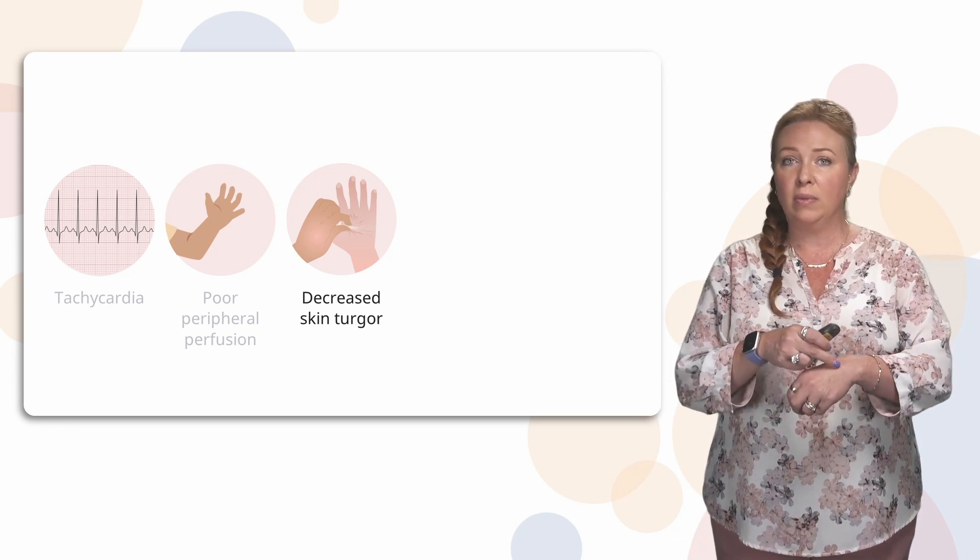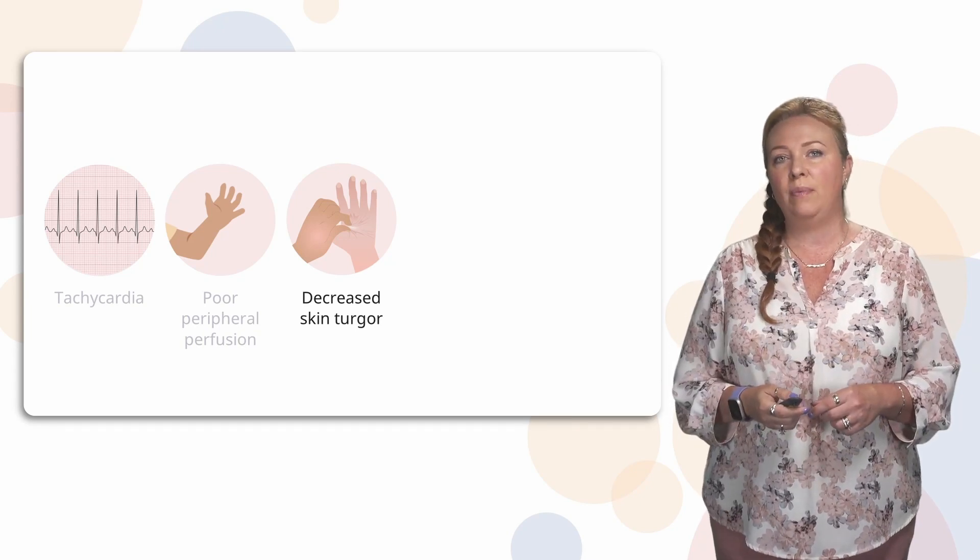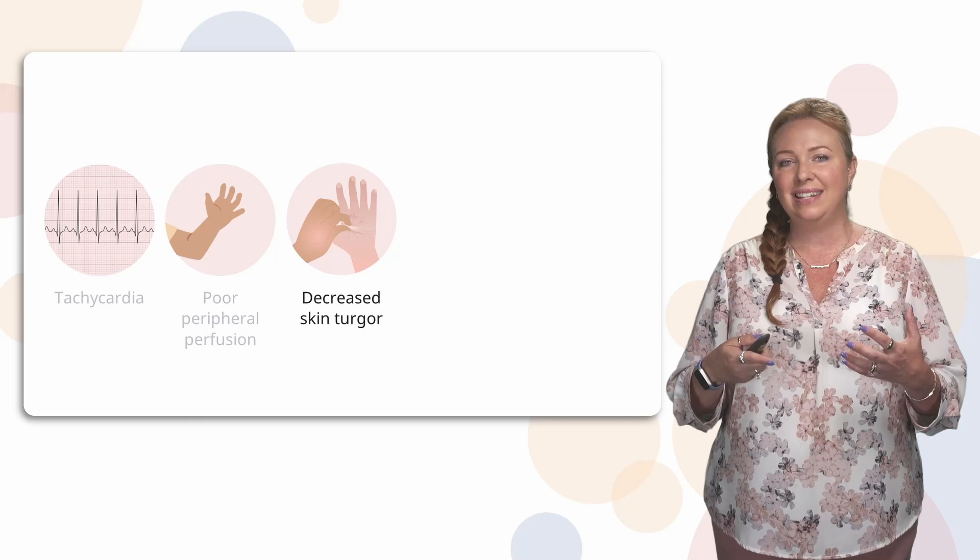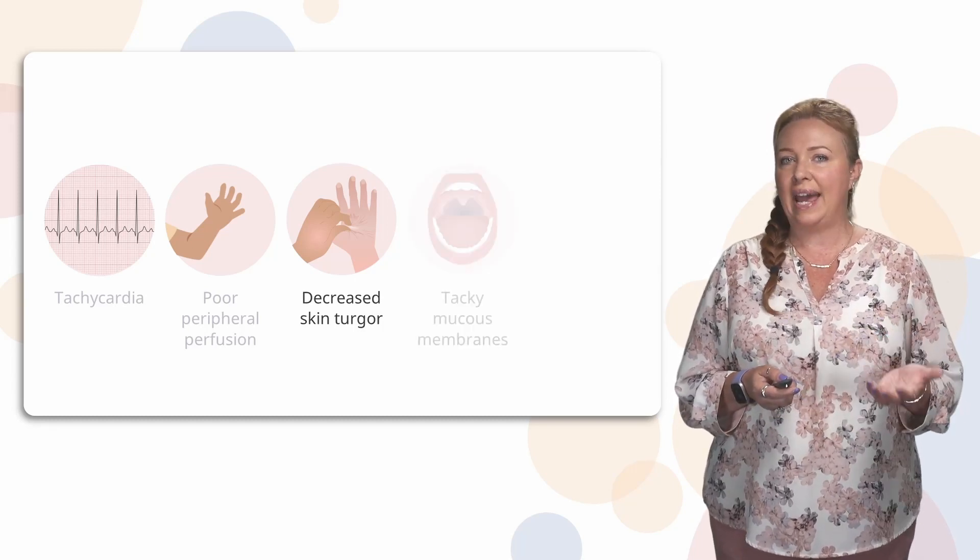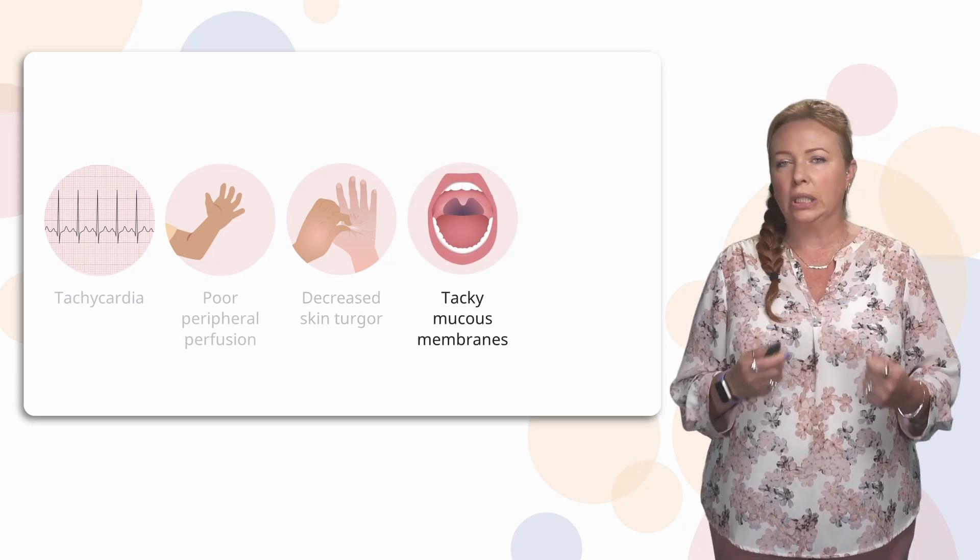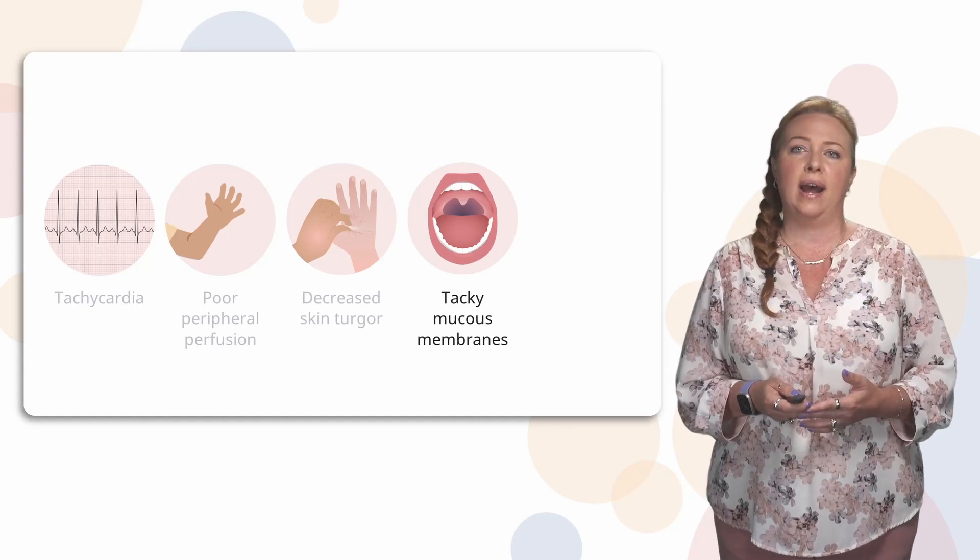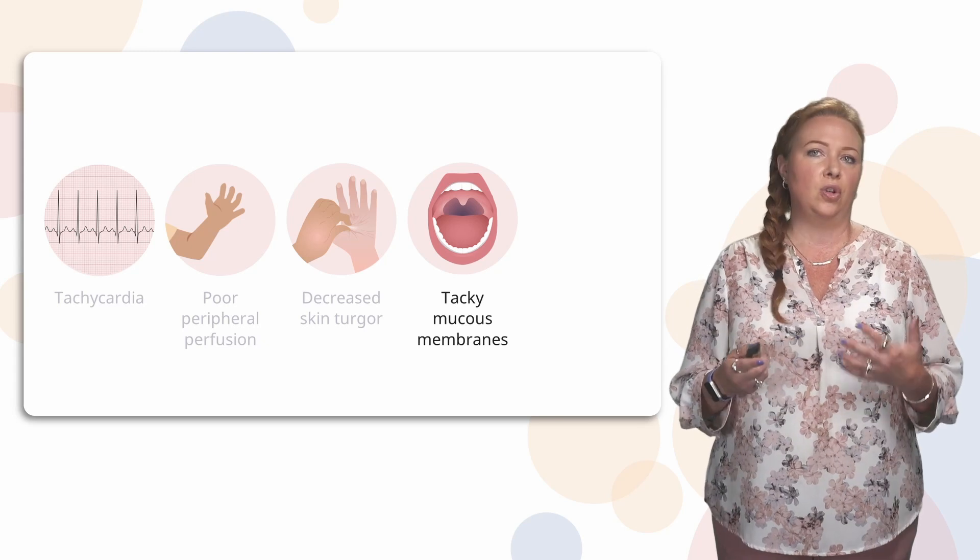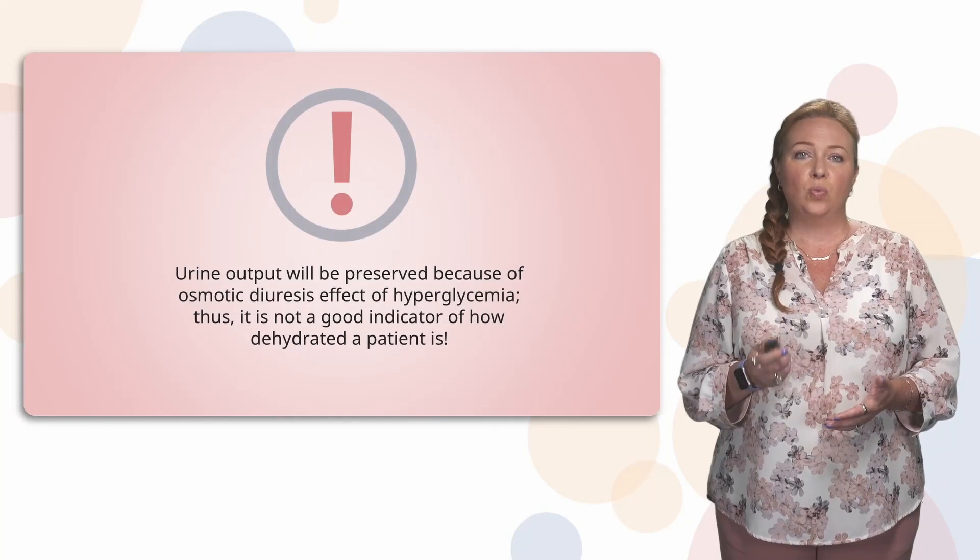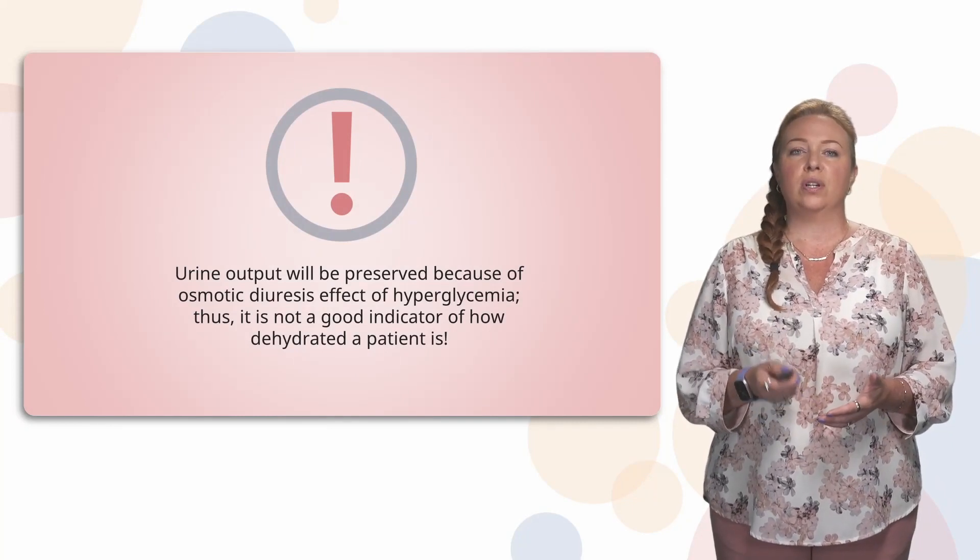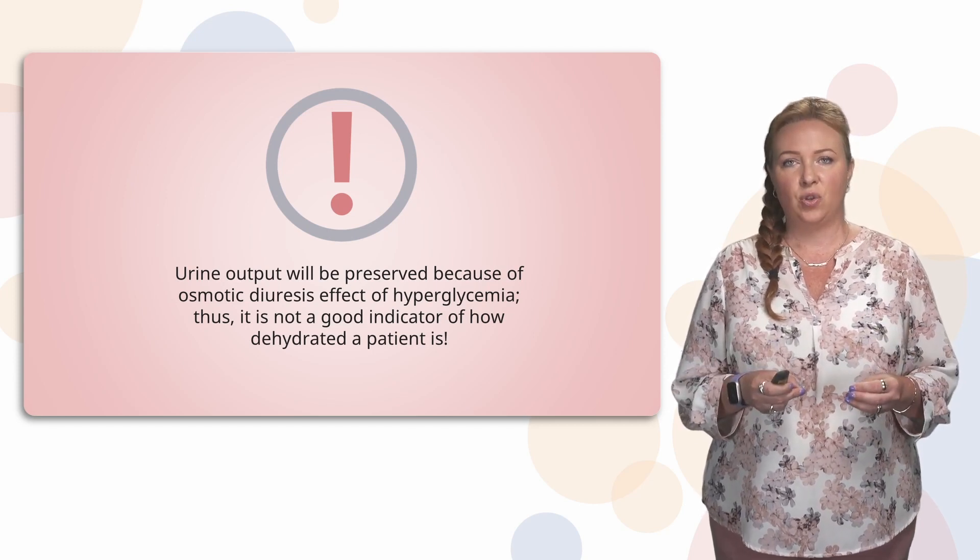You might notice some decrease in the skin turgor. If you remember, turgor, skin turgor, means that when you pinch that skin, you want it to go right back to where it started from. If it stays tented, then you are dehydrated. You might notice tacky mucous membranes. That spit just gets really extra thick and that mouth looks dry. Maybe their lips look a little bit cracked. And if you have a younger child who is crying, you're not going to see any tears.